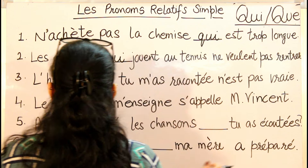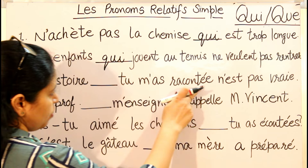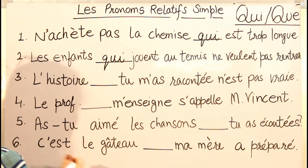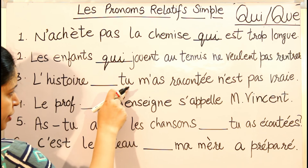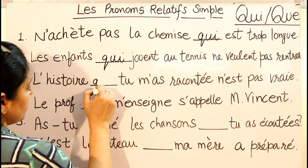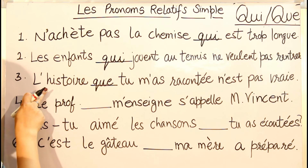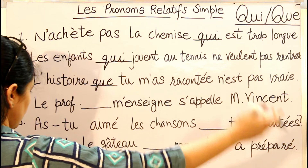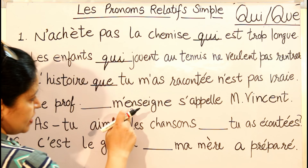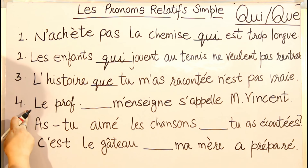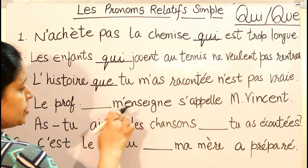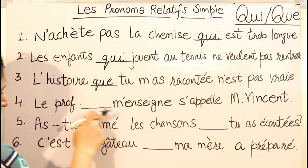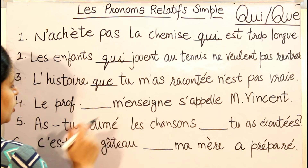Third: 'L'histoire [blank] tu m'as contée n'est pas vraie' — the story you told me is not true. After the blank there is a pronoun — a subject — so we write QUE: 'L'histoire QUE tu m'as contée n'est pas vraie.' Fourth: 'Le prof [blank] m'enseigne s'appelle Monsieur Vincent' — the teacher who teaches me is called Mr. Vincent. After the blank there is a verb, so we write QUI.